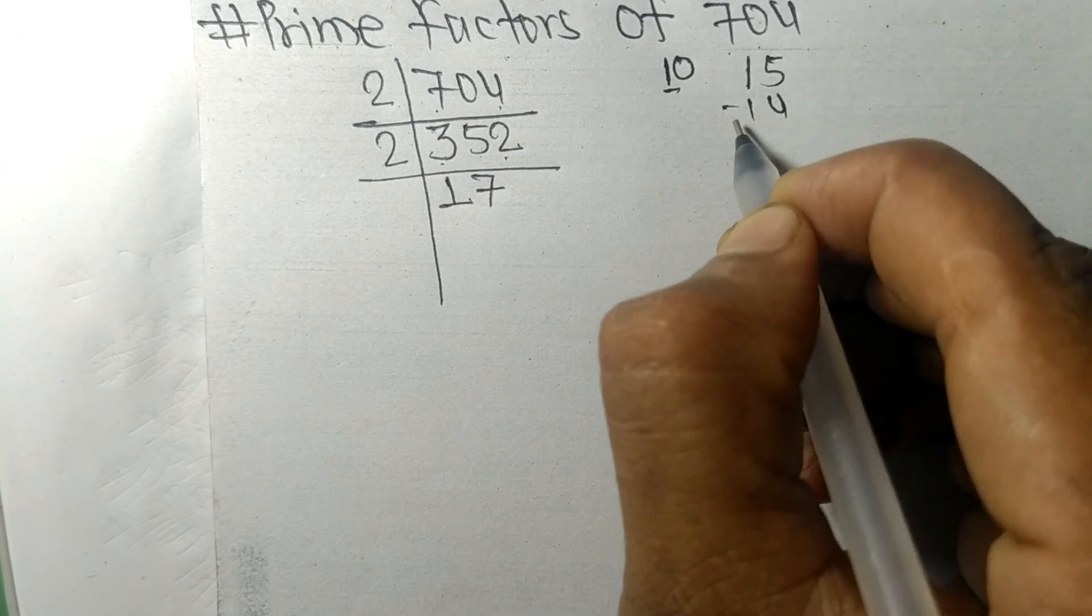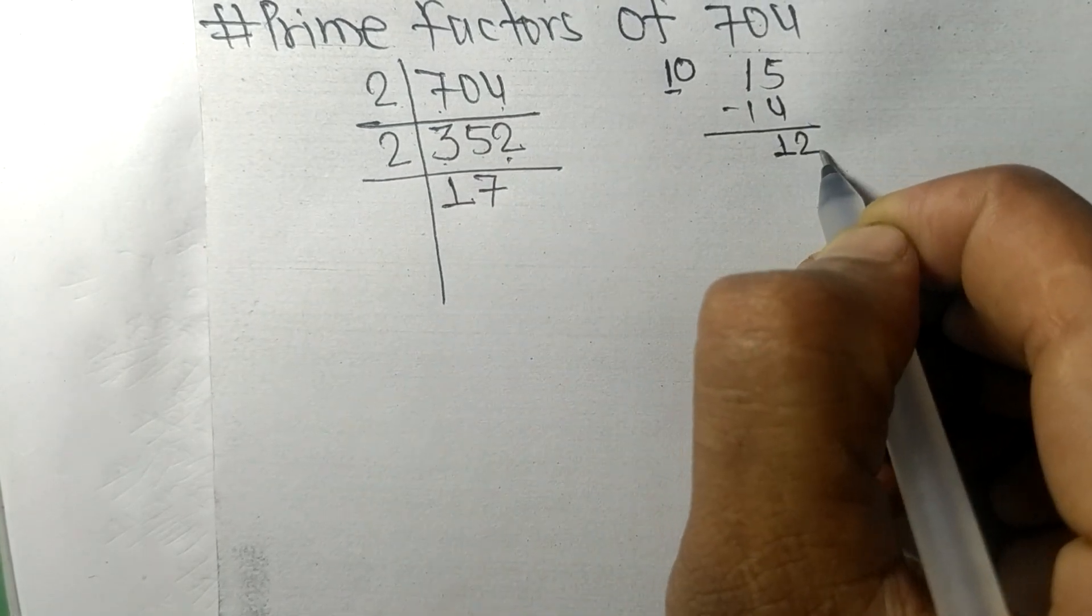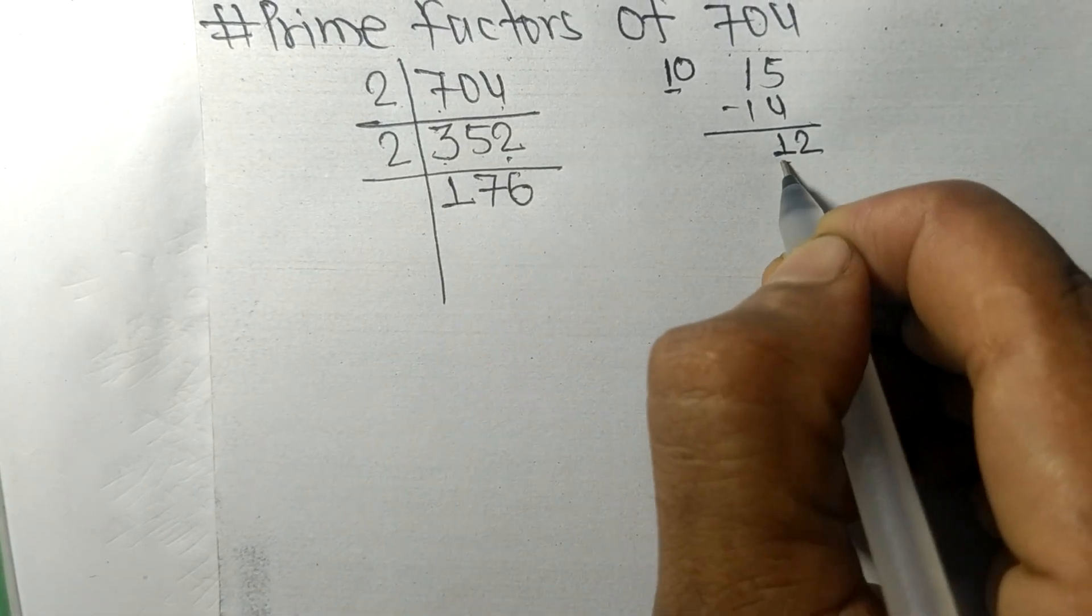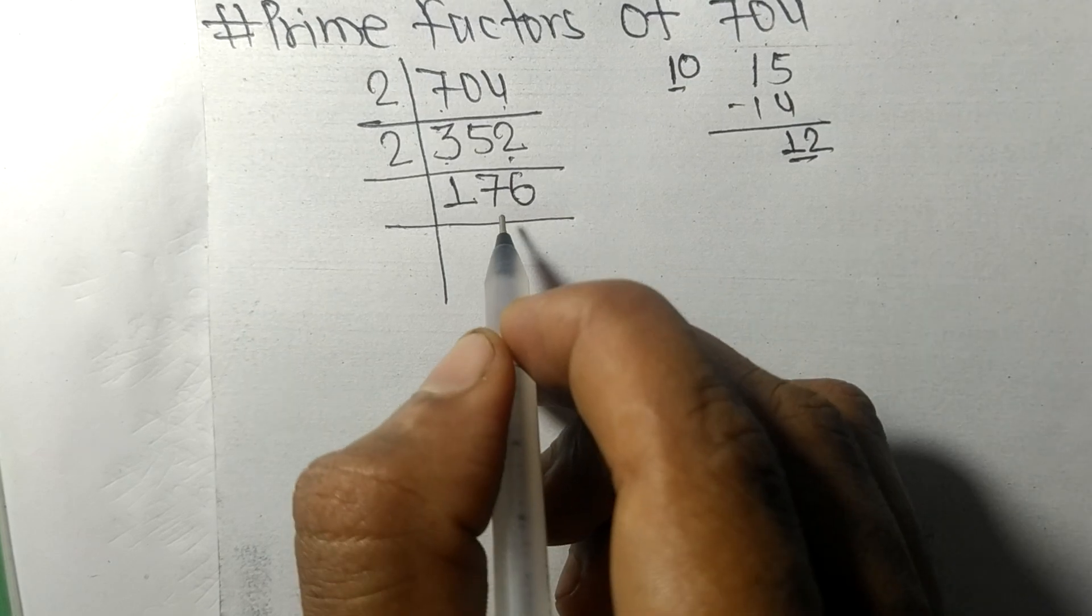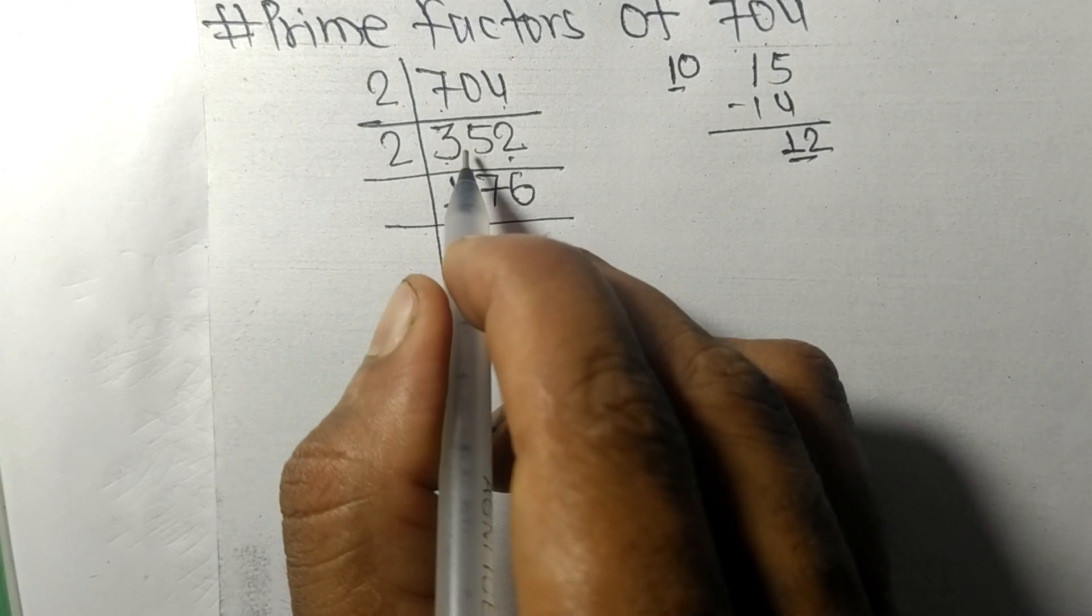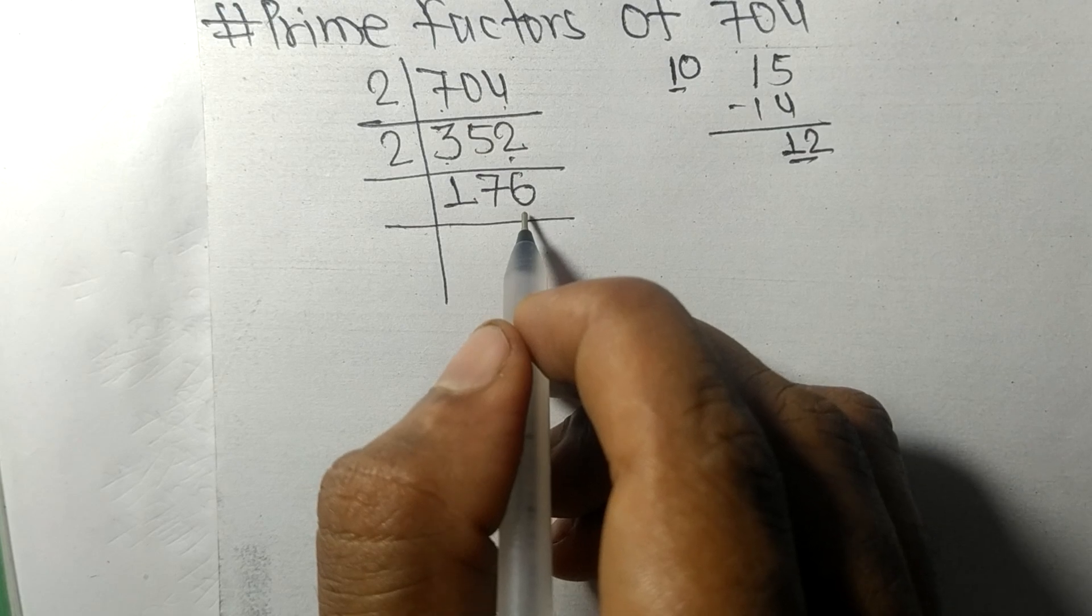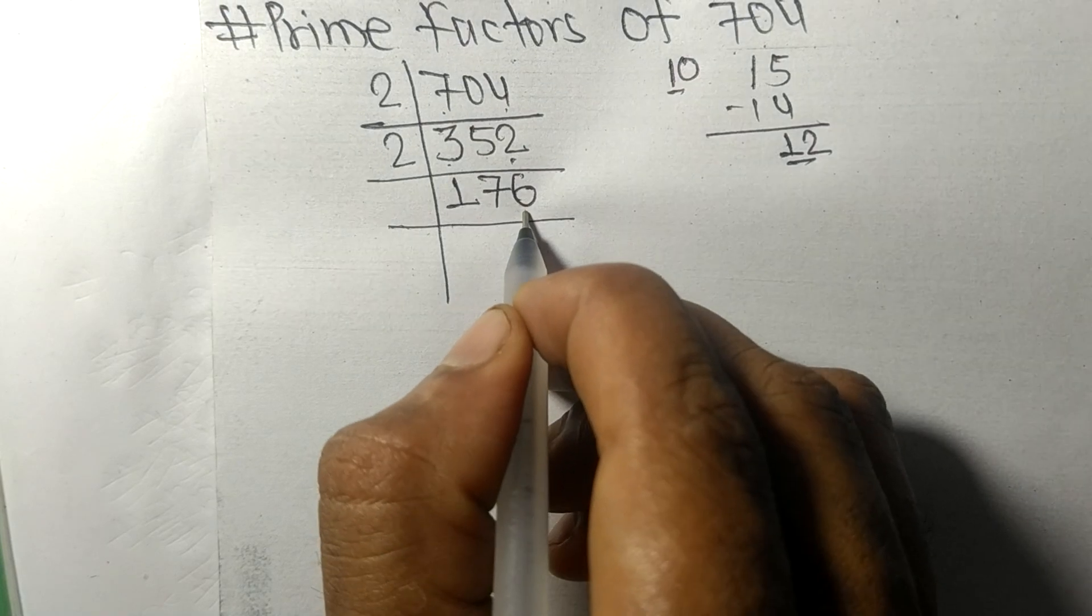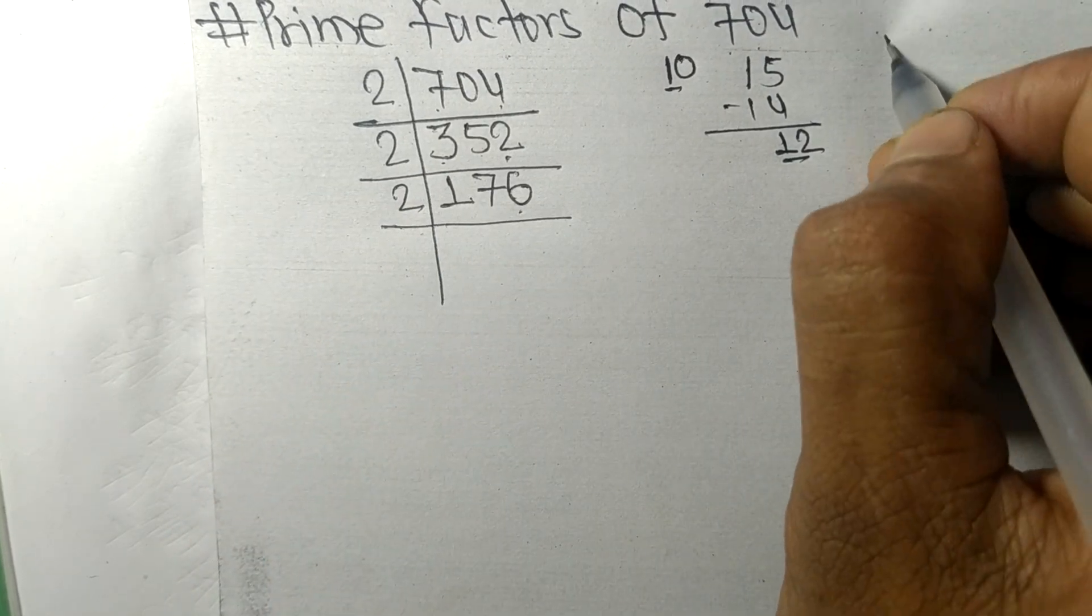So now we got 176 on dividing 352 with 2. Again it has even number 6 at last, so it is divisible by 2. Here is 17, 2 times 8 mean 16, and we get here 1. And this 6, 16, 2 times 8 mean 16.